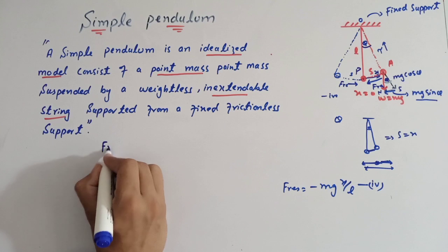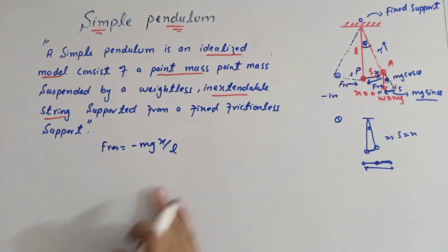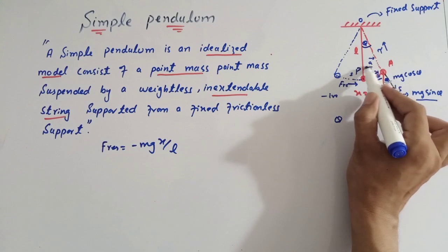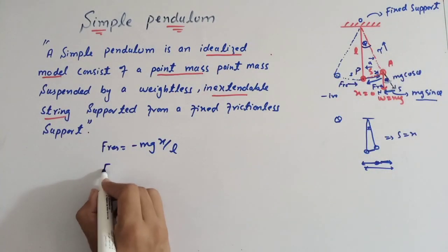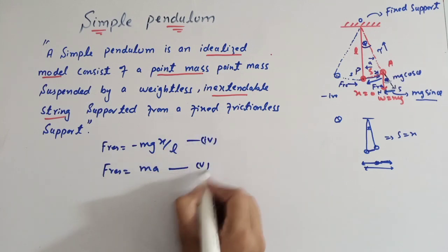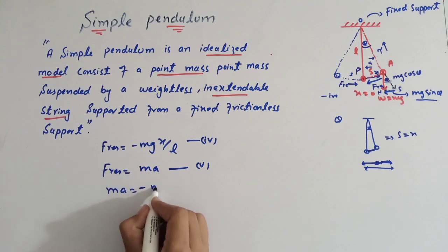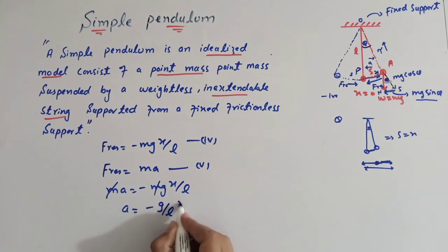Restoring force = −mg(x/l)۔ Newton's second law کے مطابق acceleration کی direction بھی mean point کی طرف ہے کیونکہ acceleration force کی direction میں ہوتا ہے۔ Newton's second law: F = ma — یہ equation number 5۔ Compare equation 4 and equation 5: ma = −mg(x/l)۔ m اور m cancel ہوتے ہیں، تو acceleration = −(g/l) × x۔